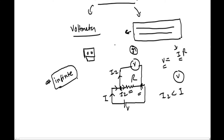To calculate potential accurately, we use the potentiometer. The main feature of the potentiometer is that it does not draw any current from the circuit, unlike the voltmeter. Hence we get the accurate value of potential difference. That is why we use the potentiometer to measure potential difference, the EMF of a cell, or to compare EMFs of cells.